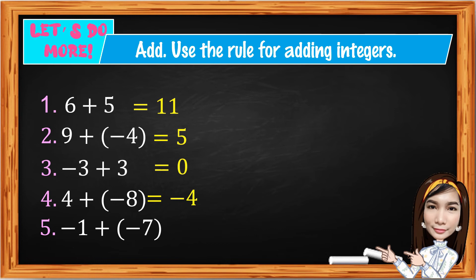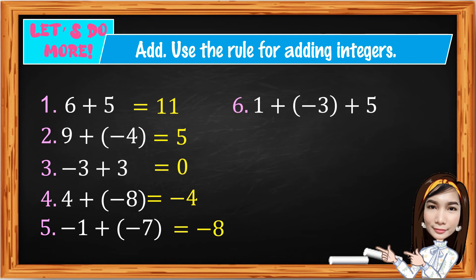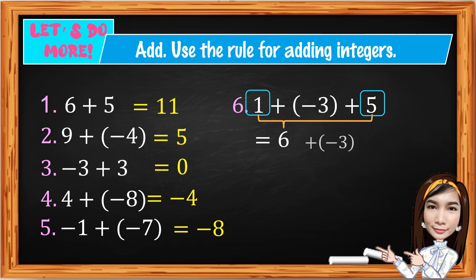Number 5: Negative 1 plus negative 7. They are both negative, so add the absolute values: 1 plus 7 gives 8. Keep the negative sign: the answer is negative 8. Number 6 has 2 or more addends, so combine the same signs first. Positive 1 plus positive 5 equals 6, then bring down negative 3. They are unlike signs: subtract 6 minus 3 gives 3. Keep the sign of the bigger absolute value, which is positive 6. The answer is positive 3.